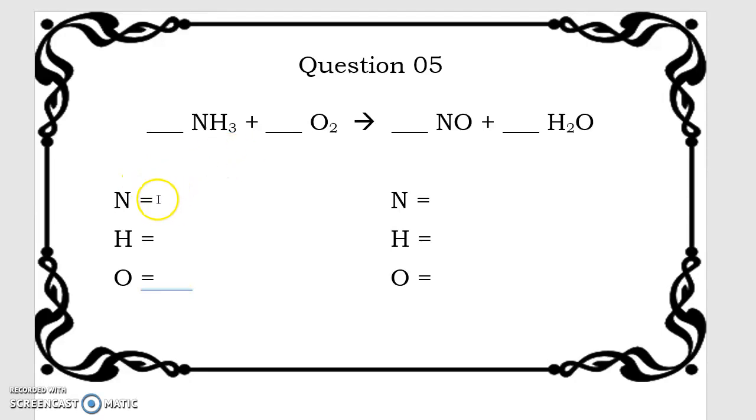Taking a look at question five, the first thing we're going to start with is counting our atoms. Nitrogen atoms, we have one on the reactant side. There's just one. There's no subscript, so there's only one atom. We have three hydrogen atoms and we have two oxygen atoms because we have O2.